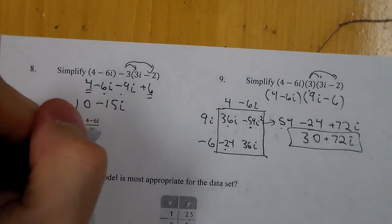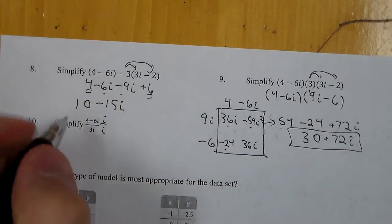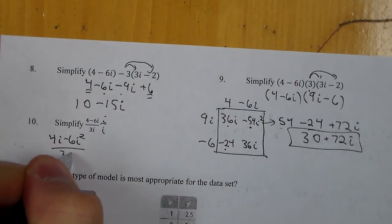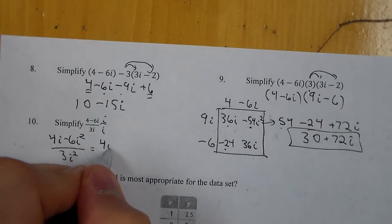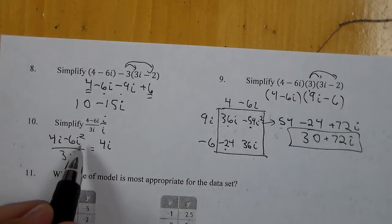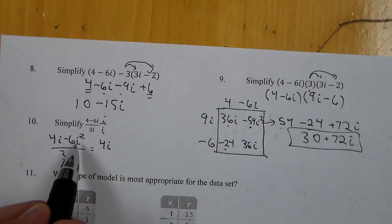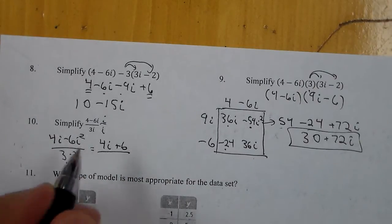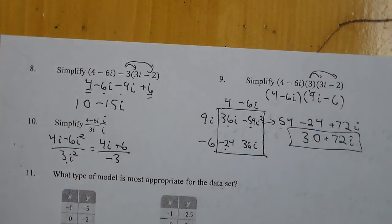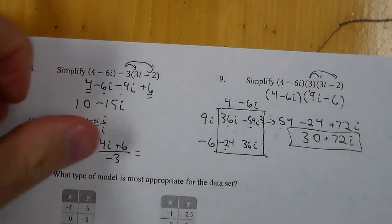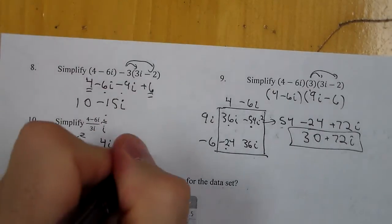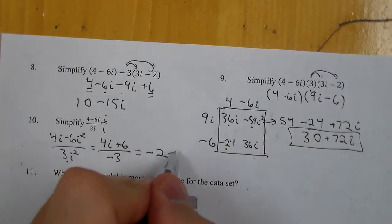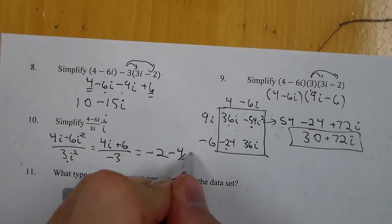For number 10, to simplify it I'm going to multiply the top and the bottom by i. I get 4i minus 6i squared over 3i squared. That gives me 4i. Minus 6i squared becomes positive 6 because i squared is negative 1. And the denominator becomes negative 3. So written in complex form: 6 over negative 3 is negative 2, and 4i over negative 3 is minus 4 over 3 times i.